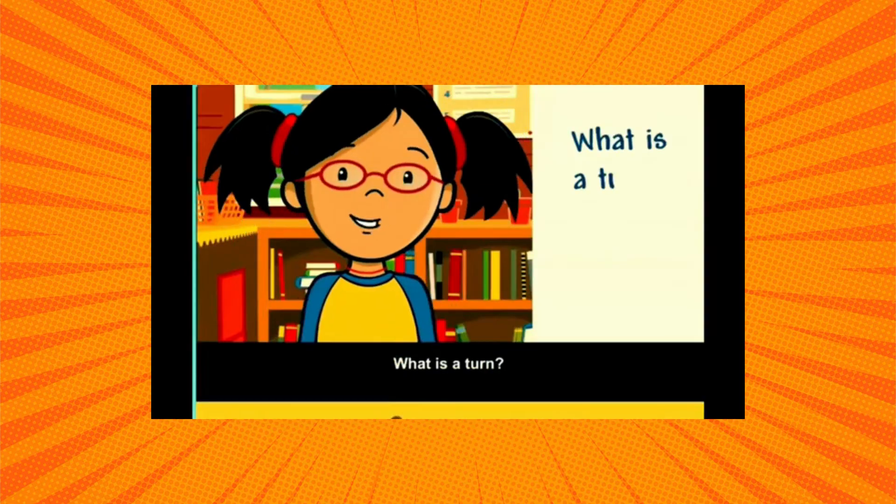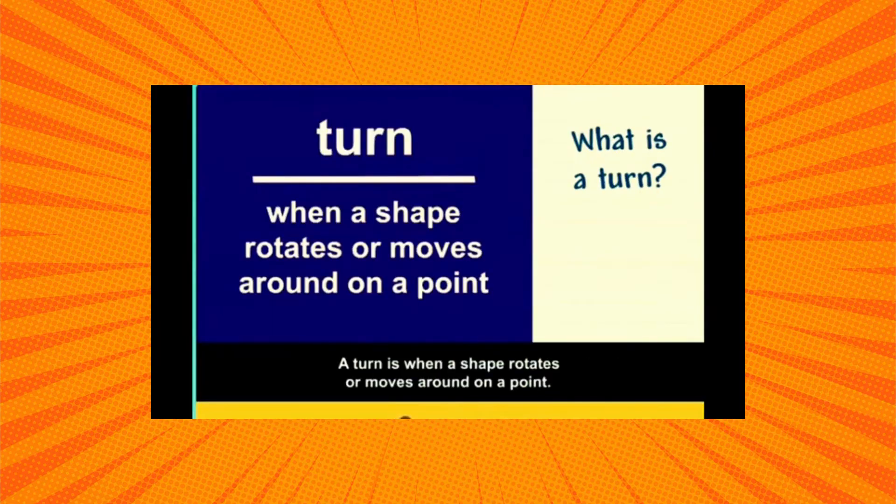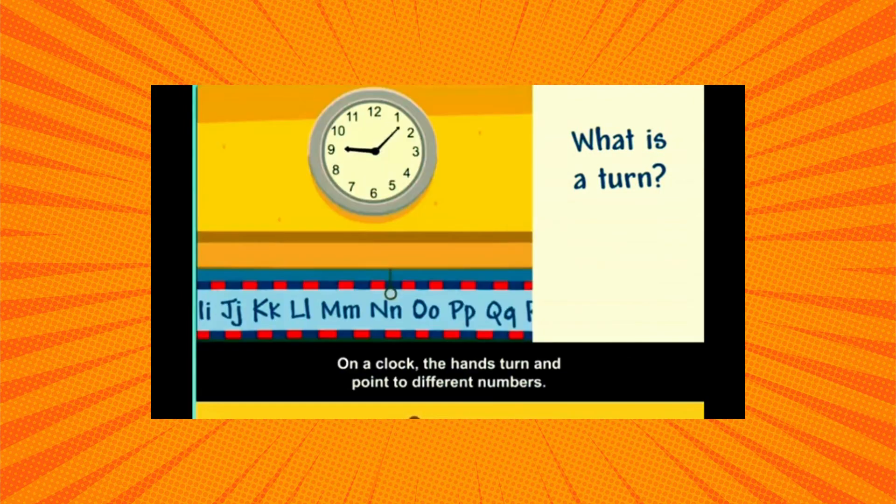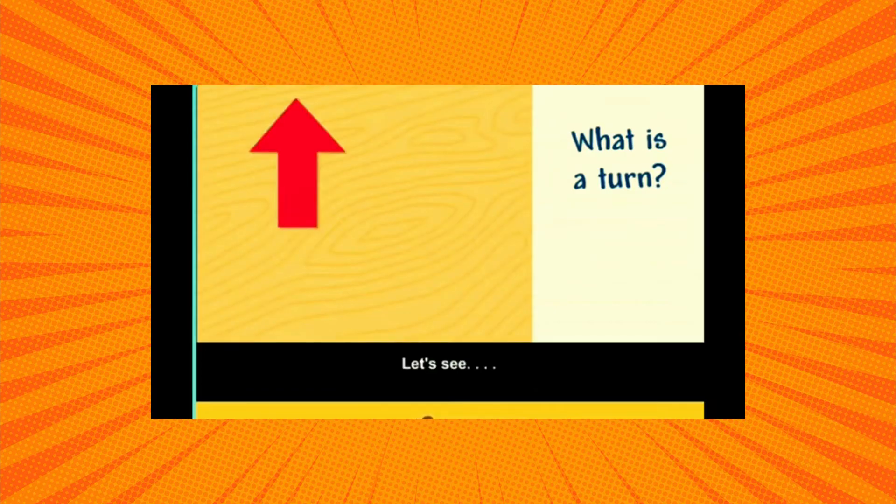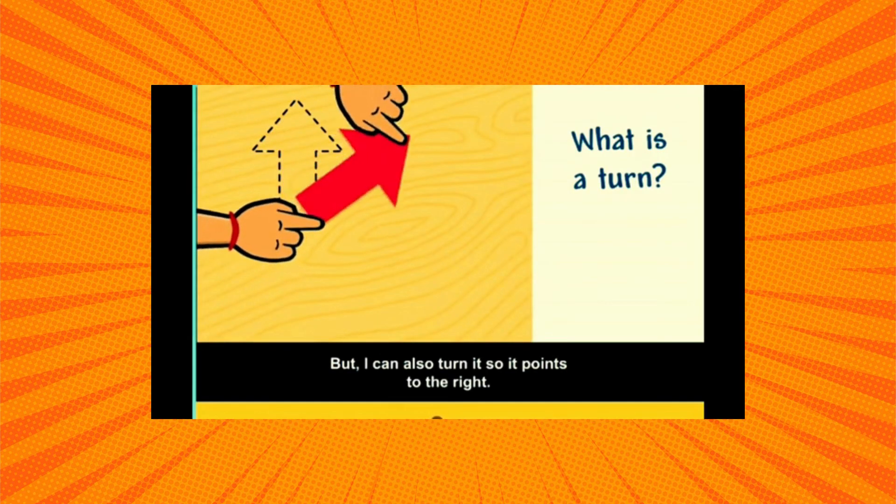What is a turn? A turn is when a shape rotates or moves around on a point. On a clock, the hands turn and point to different numbers. Let's see, this arrow is pointing up, but I can also turn it so it points to the right.